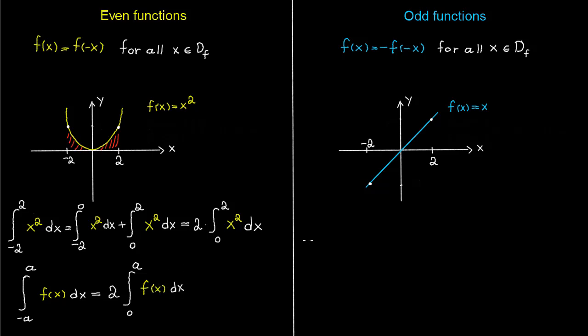Let's continue with the rule for the odd function. Let's say that you are going to integrate the odd function x over the interval -2 to 2. We start by splitting it up like last time, so we integrate first from -2 to 0, and then we integrate from 0 to 2.